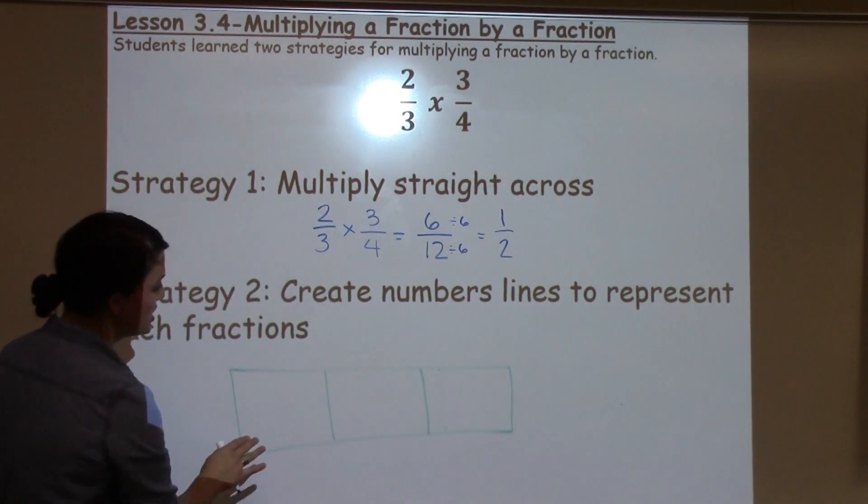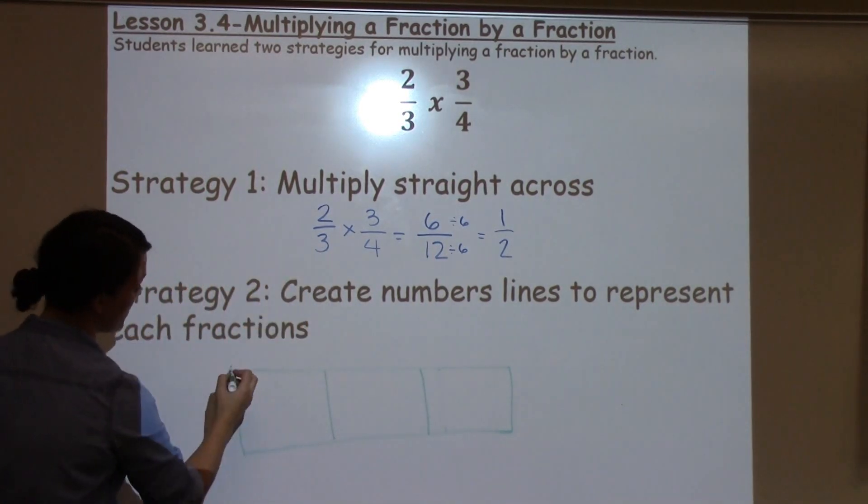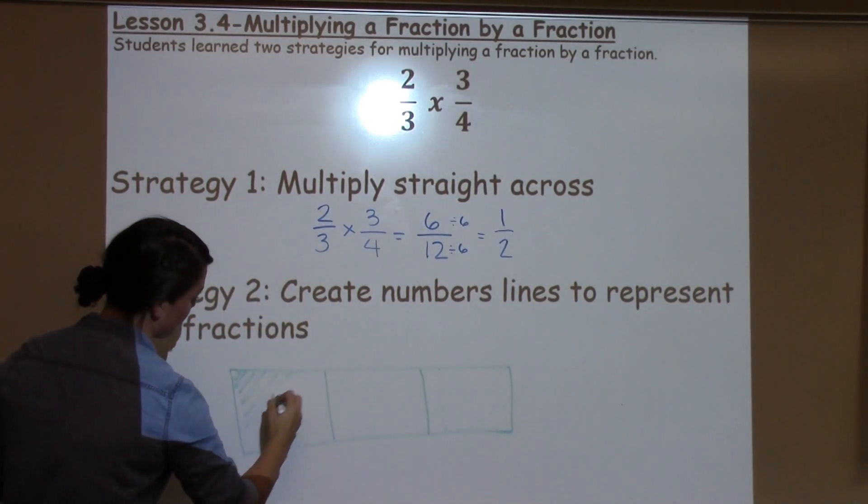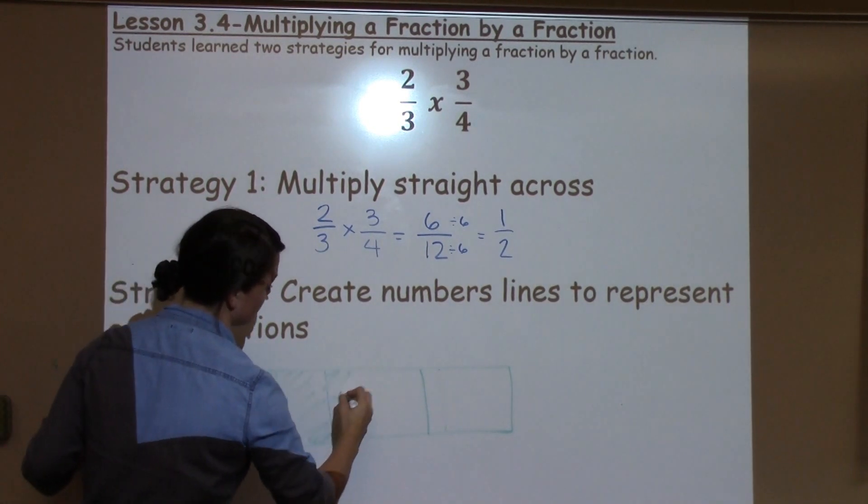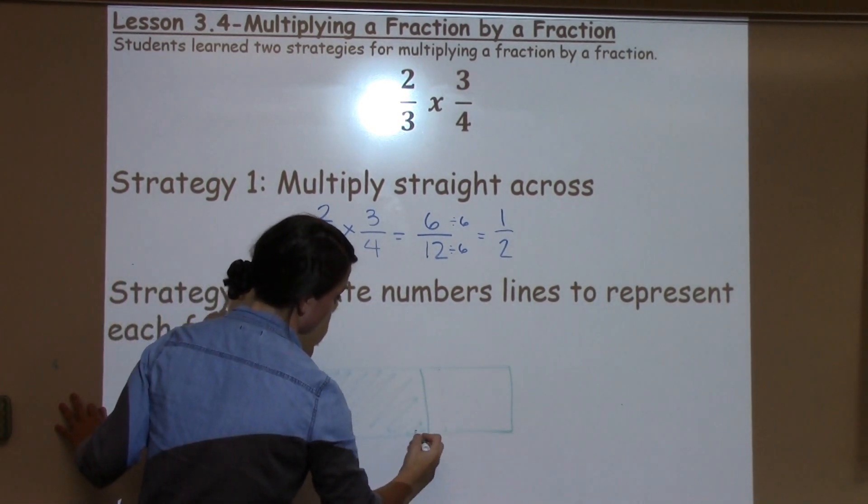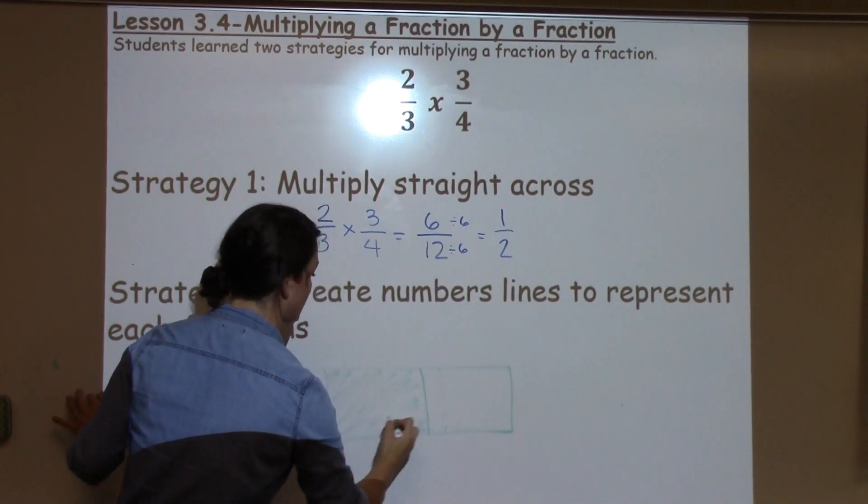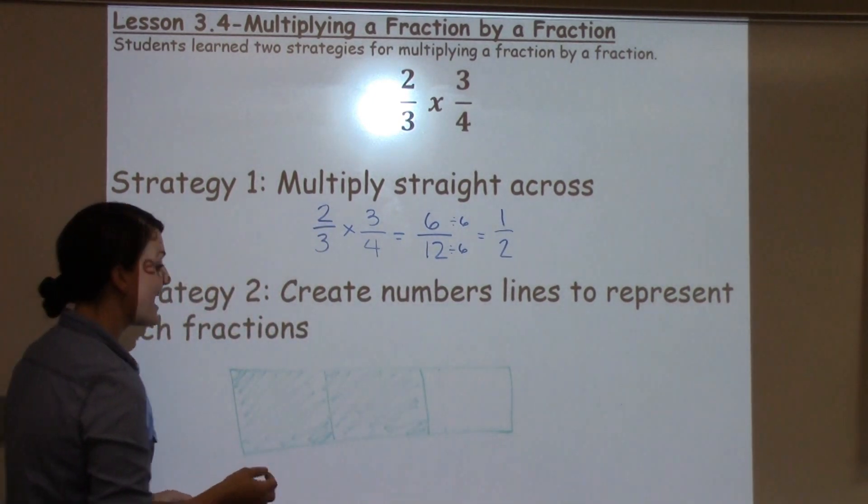That's a little better. So, three sections: 1, 2, 3. And because I want 2 thirds, I'm going to color in two of them. So, this one and this one. This picture represents 2 thirds. Two are shaded in out of the three.